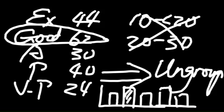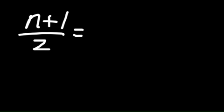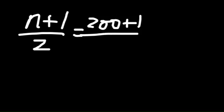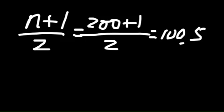Because this is qualitative data, we don't have a mean. If we want to find the median, we need to first define the location of our median using the equation (n + 1) / 2. Since we have 200 customers in total, that gives us 200 plus 1 divided by 2, which equals 100.5. This is the location of our median.